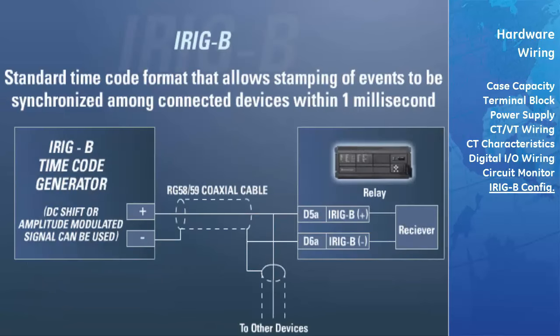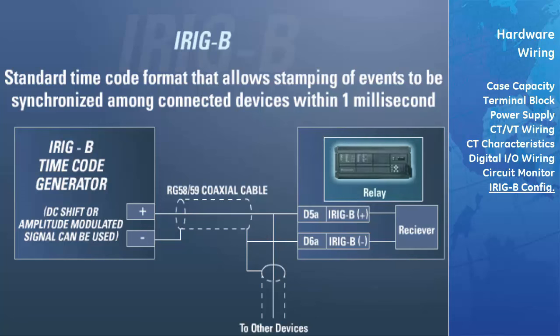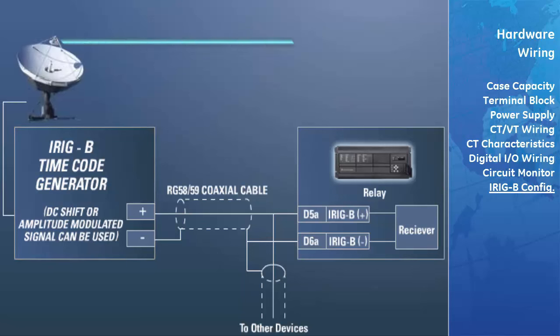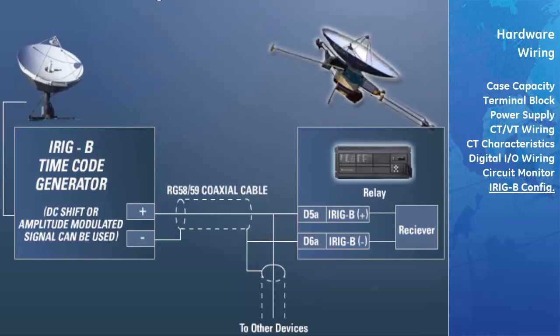IRIG-B is a standard timecode format that allows stamping of events to be synchronized among connected devices within one millisecond. The universal relay supports either DC level-shifted or amplitude-modulated IRIG-B. Third-party equipment is available for generating the IRIG-B signal and may use a GPS satellite system to obtain the time reference so that devices at different geographic locations can also be synchronized.